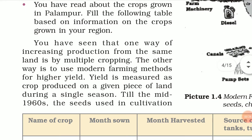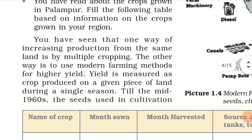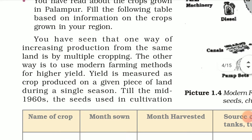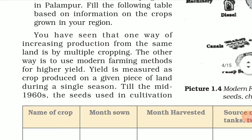You have read about multiple cropping. Today you will read about the other ways that were adopted during the Green Revolution. When we adopted the Green Revolution in India, there were many changes brought in the field of agriculture, like HYV seeds — high yielding variety — which were very different from our traditional seeds.